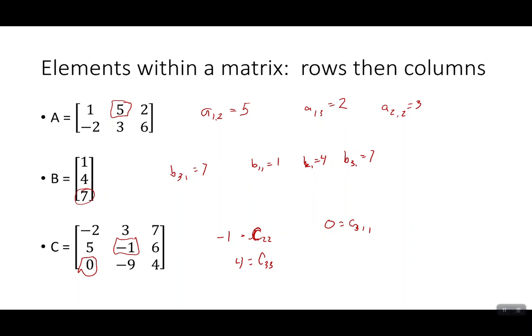The size of the matrix, again, we always list the rows, then the columns when we're talking about the size of the matrix. And then if we want to refer to individual values, we again do the rows first and then the columns. B three one is the thing that's in the third row, first column. So that would be the seven there. All right. Pretty straightforward so far.